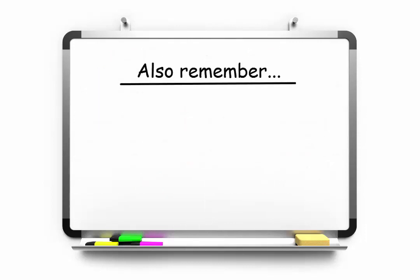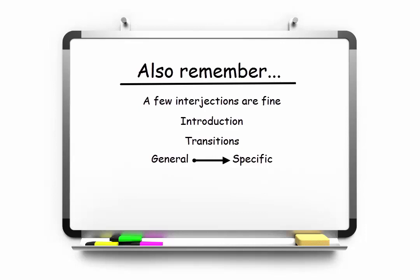In addition to these things, remember that a few interjections are totally fine. You should include clear introductions and transitions. And you should move from a general to a specific description of the situation. Don't worry if you have an accent. An accent is fine as long as you speak clearly. And try not to leave any long pauses when you're speaking.